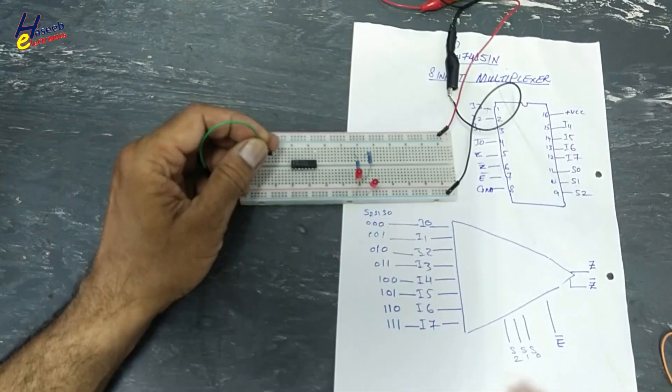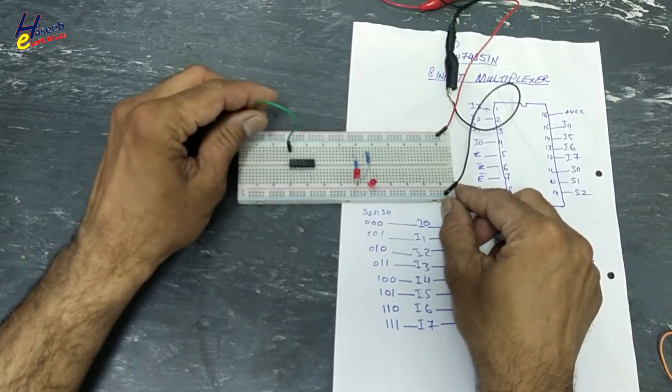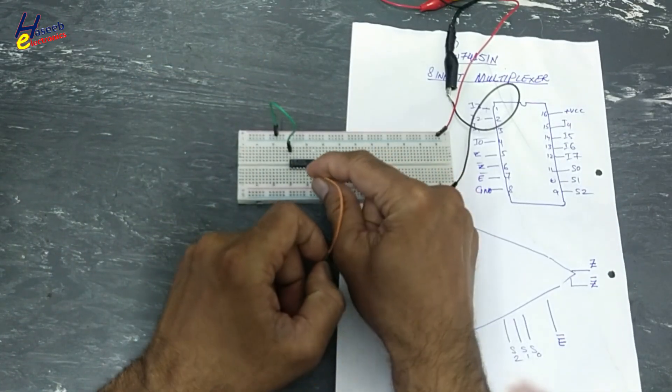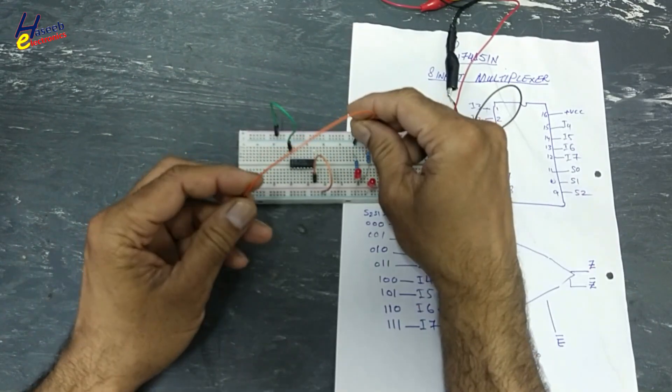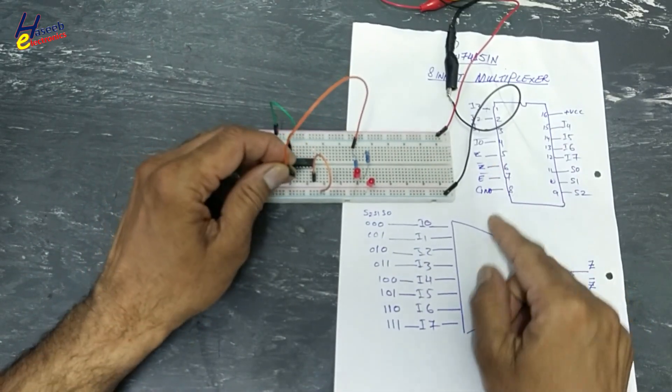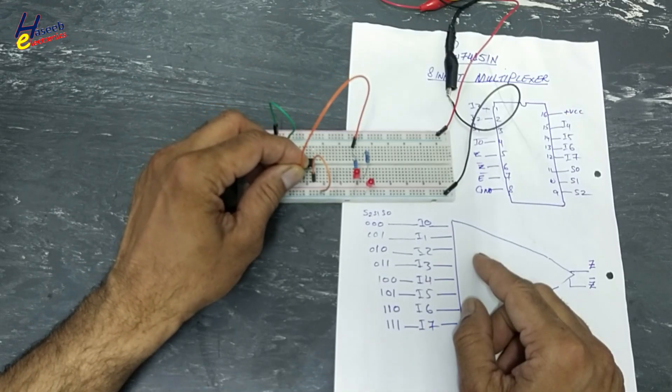16 pin IC. TTL IC, 5V power supply. Pin number 16, VCC. Pin number 8, ground. We will connect Z output. That is pin number 5, 1, 2, 3, 4, 5.